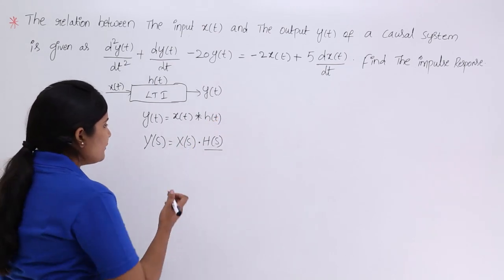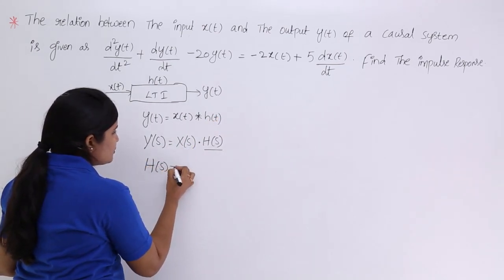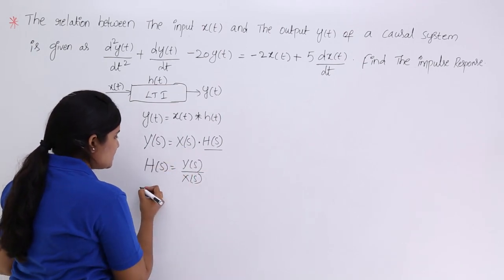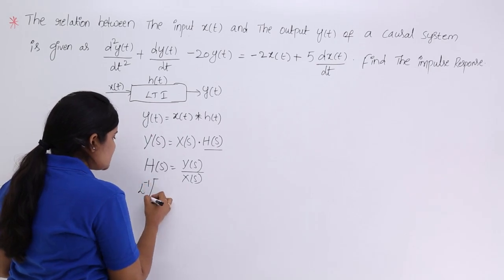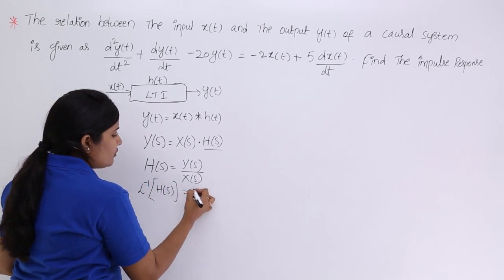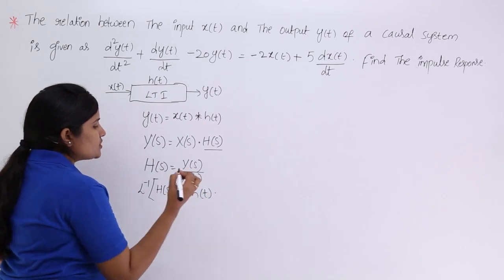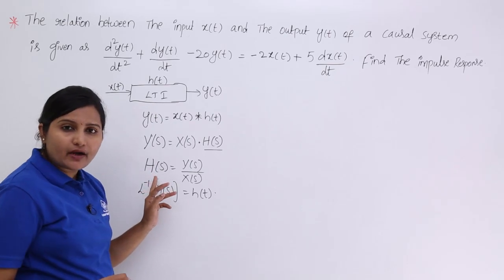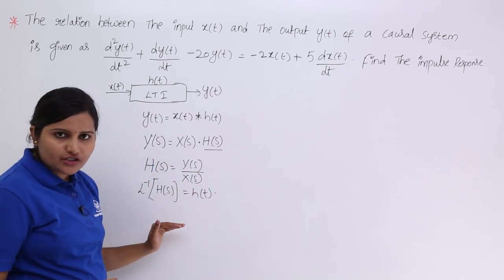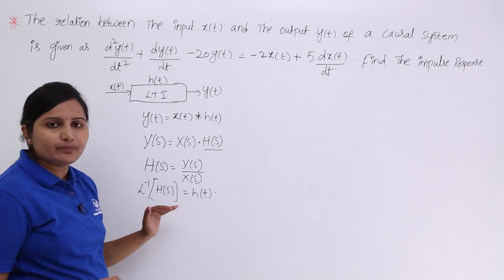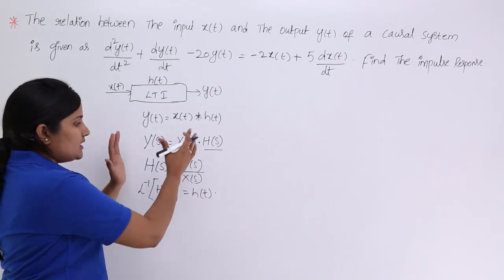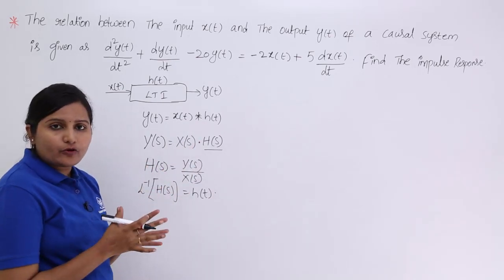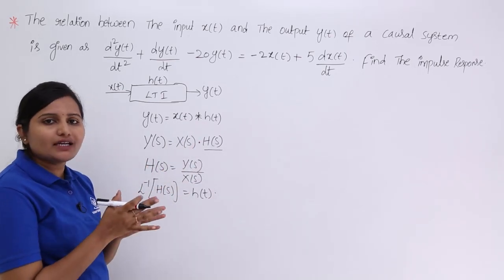If we compute H(s) = Y(s)/X(s) and then take the inverse Laplace transform of H(s), we simply get h(t). Since in the frequency domain we have multiplication, it is easy to find the transfer function, and from the transfer function it is straightforward to find the impulse response. So I want to execute this process and work in the frequency domain, not in the time domain.